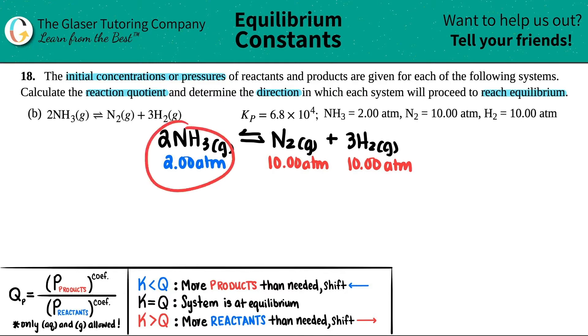Now I do have starting amounts on both sides, right? On the left-hand side I have 2.00 ATM, and on the right-hand side I have 10.00 ATM for both of them. The question is, which way are we going to go? Are we going to go in the forward direction and have this decrease and this increase, or are we going to go in the reverse reaction in which this side will get lower and this side will get higher? Well, that all comes from the reaction quotient.